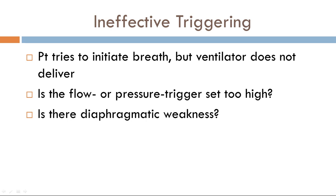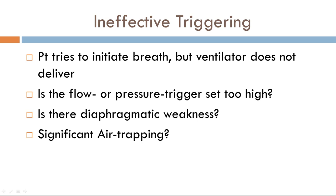Another cause is diaphragmatic weakness — you need the diaphragm to contract to generate a pressure or flow, but if the diaphragm is too weak, you'll get ineffective triggering. There's also significant air trapping. When you inhale fully but only partially exhale repeatedly, it becomes increasingly difficult to inspire because the lungs have too much volume. This is known as air trapping or auto-PEEP, and it also leads to ineffective triggering.